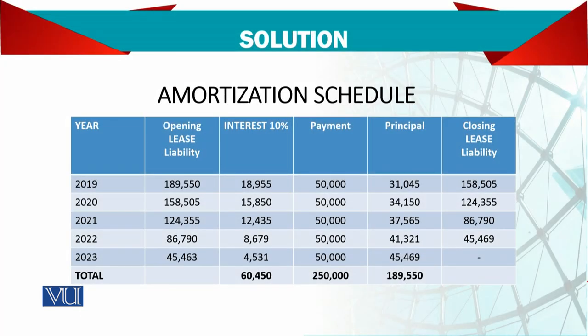Now we need to find out the amortization schedule. The liabilities table shows the opening balance, interest at 10%, the payment, the principal repayment, and the closing liability.